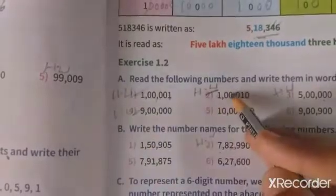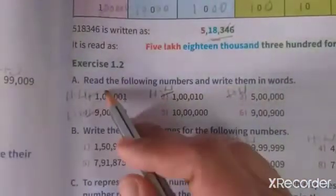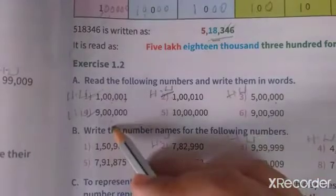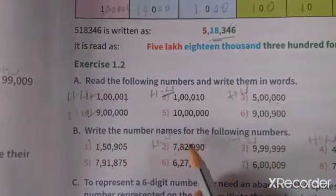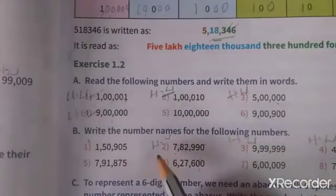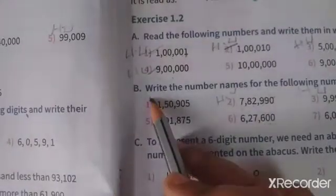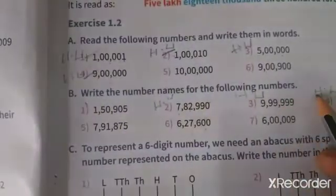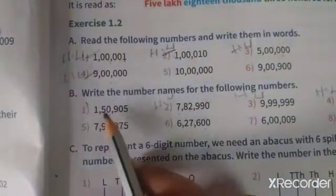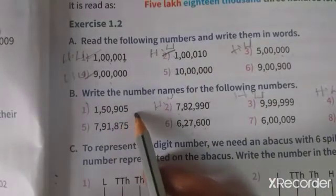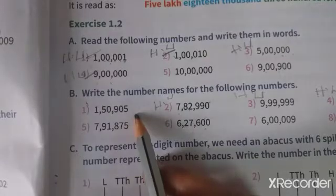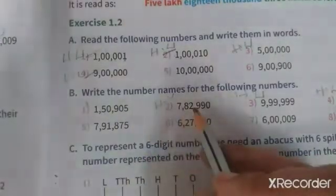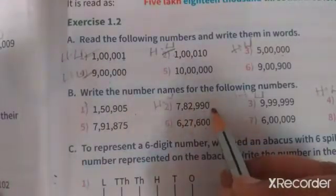The first one is homework, the second one is homework as well. The third and fourth are also homework. Now, write the number name for the following numbers — the number is given and you have to write it in words. For example: one lakh fifty thousand nine hundred and five is given in number form; you have to write it in words. Then seven lakh eighty two thousand nine hundred and ninety.